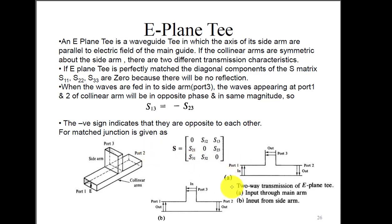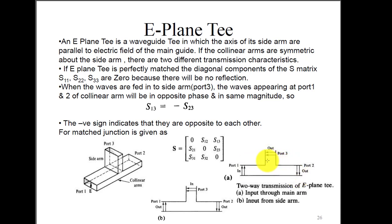The diagram shows the electric field lines in the E-plane T-junction. When the input is applied at port 1 and port 2 with a 180-degree phase shift, the power is added and observed at port 3. Conversely, if the input is applied at port 3, it divides between port 1 and port 2 with an out-of-phase, 180-degree phase shift.